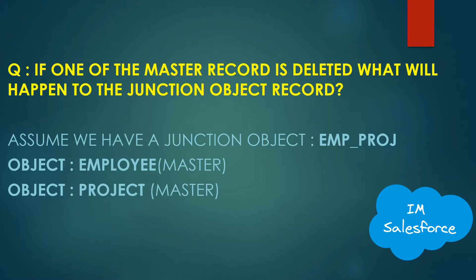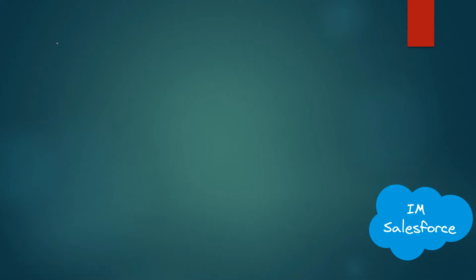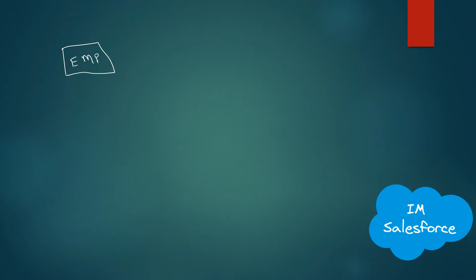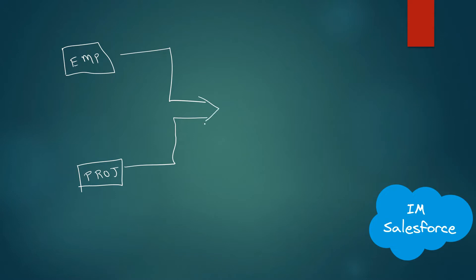Assuming we have a junction object called Employee Project, we have two objects — one is Employee and the second one is Project. We have one Employee object, one Project object, and then we have created another object called Employee Project. This is a custom object, this is a custom object, and this is also a custom object.